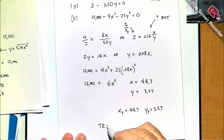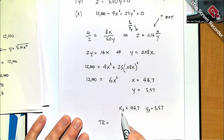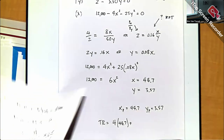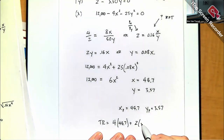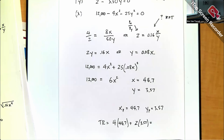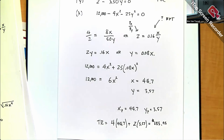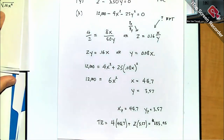The revenue earned from this optimal production decision is: 4 × 44.7 + 2 × 3.57 = 178.8 + 7.14 ≈ $185.95. That's how much money we generate from producing and selling in the international markets.